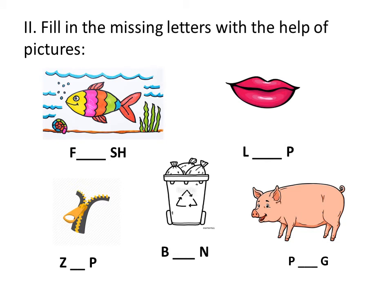The next question is fill in the missing letters with the help of pictures. You can see the picture and you have to find the missing letters. The first picture is of fish — F-I-S-H. The missing letter is I, because we are doing the sound of I. The next picture is lip — L-I-P, so you have to write I here. See the picture and do it in your notebook.